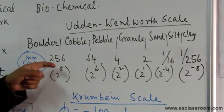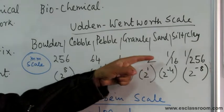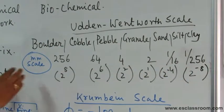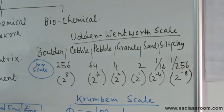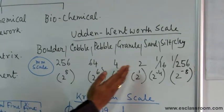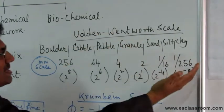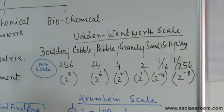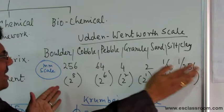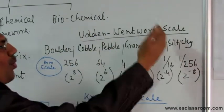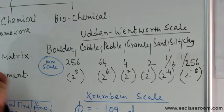In the millimeter scale, the boundaries are at 256 mm, 64 mm, 4 mm, 2 mm, 1/16 mm, and 1/256 mm — these are the boundaries of the different size classes. The scale was proposed such that on the coarser side sizes increase as powers of 2, and on the finer side sizes decrease as powers of one-half. This is how the whole Udden-Wentworth scale is devised from 256 down to 1/256 mm.